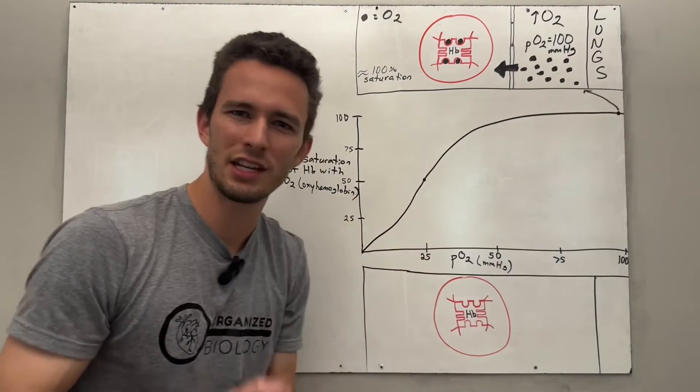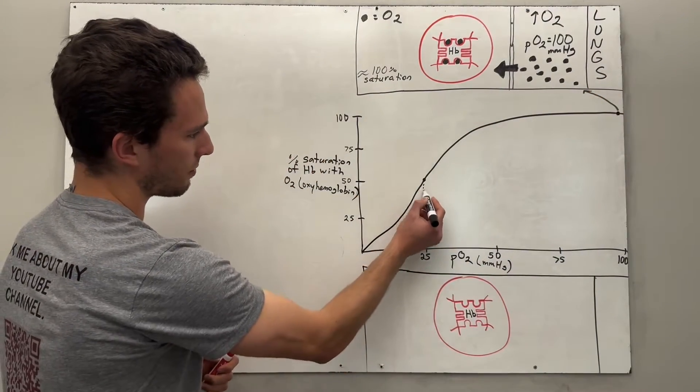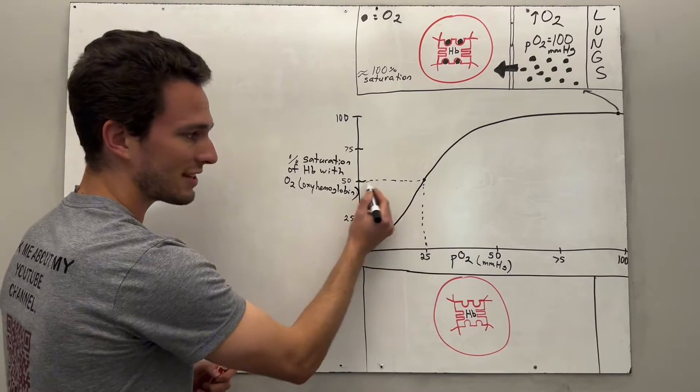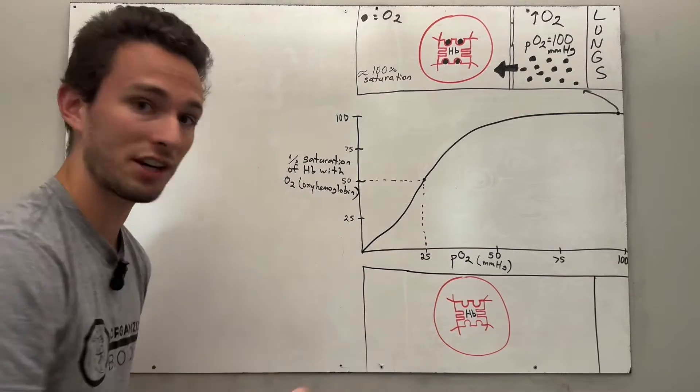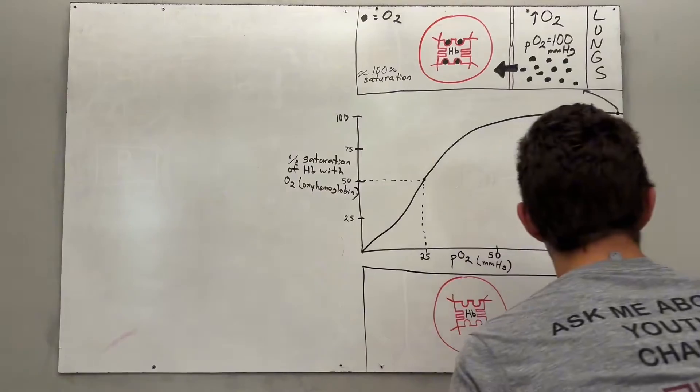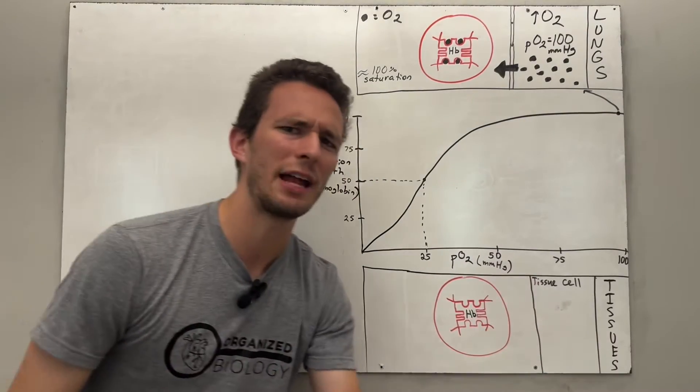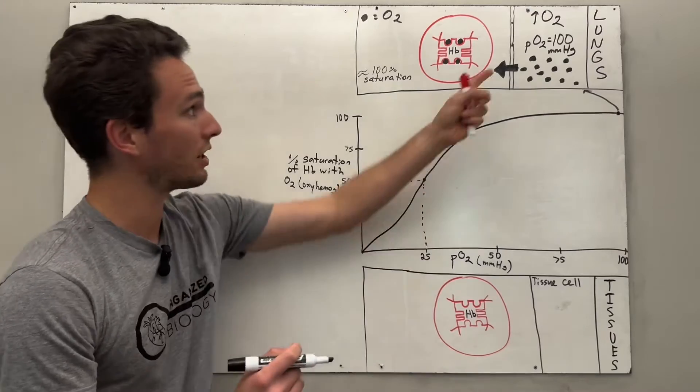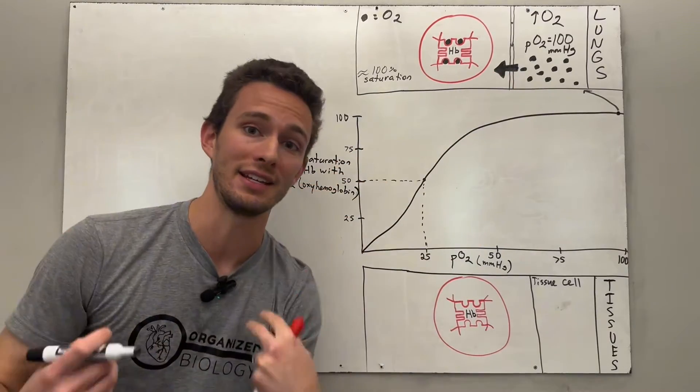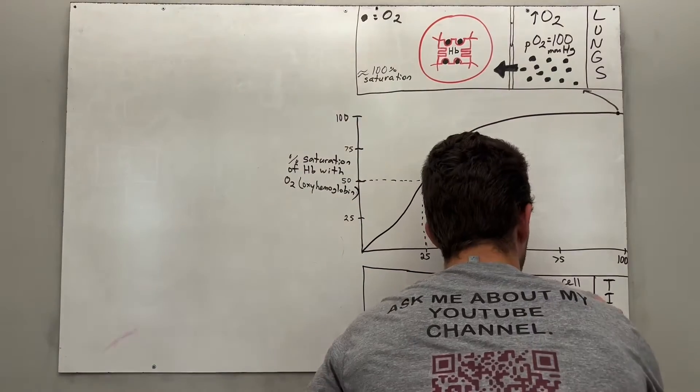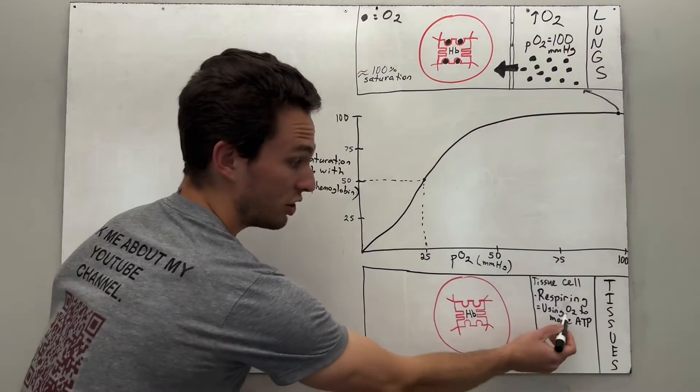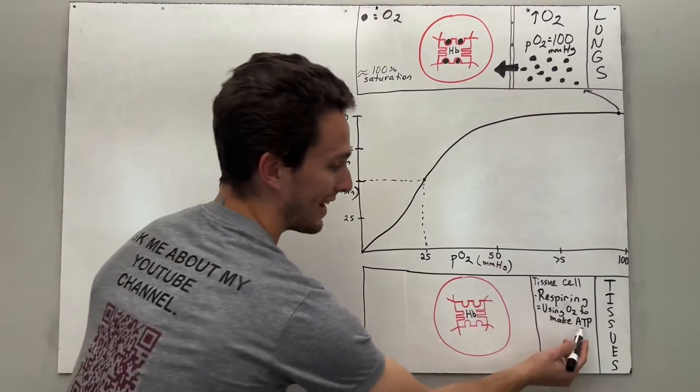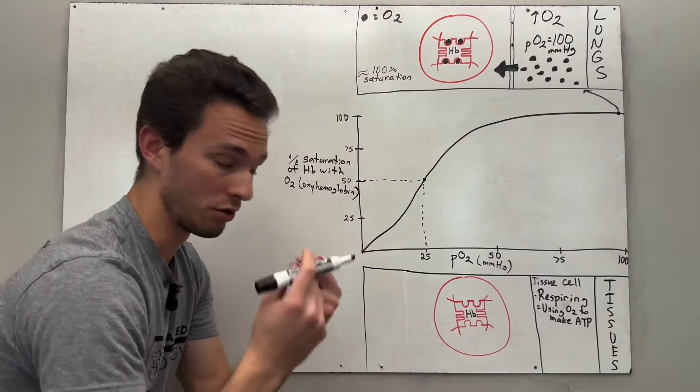Now let's take a different point in the graph. We'll take it right about here where we're looking at the partial pressure of oxygen being 25. We're looking at the saturation of hemoglobin. This is actually going to occur at the tissues of your body. So now we're at the tissues. And if you've learned about anatomy physiology, you know that the tissues are constantly using up oxygen, right? So that they can make ATP. We call these cells respiring cells, which basically means that they're using that oxygen to make ATP, like energy currency for your cells.